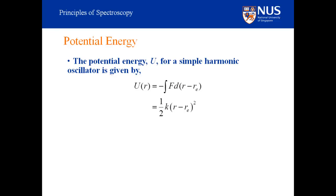If we plot the potential energy for this system, we are plotting a quadratic function. When the displacement is negative — compression — the potential energy is still positive because it depends on the square of the displacement. As displacement gets smaller, potential energy decreases. At zero displacement the potential energy is zero, and as displacement goes positive, the potential energy increases again.